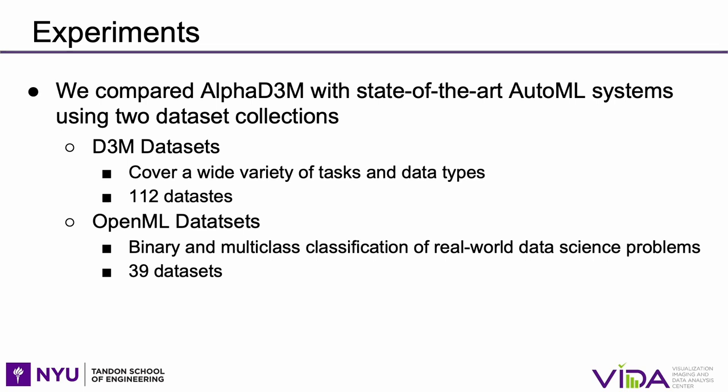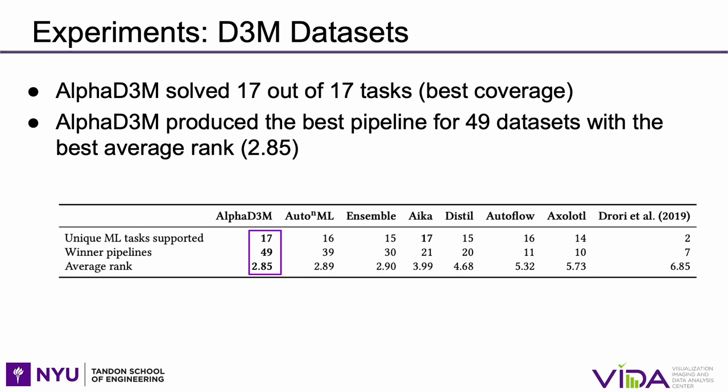We compare AlphaD3M with state-of-the-art AutoML systems using two dataset collections: D3M and OpenML datasets. The table shows the coverage of each system for each machine learning task. AlphaD3M was able to solve 17 out of 17 unique tasks, obtaining the best coverage. We also evaluate the effectiveness of AlphaD3M — it had the best overall performance, producing the best pipeline for 49 datasets with the best average rank of 2.85.